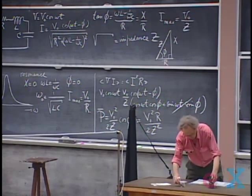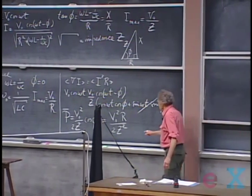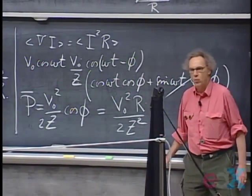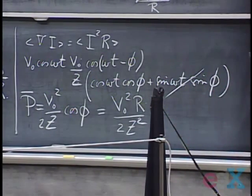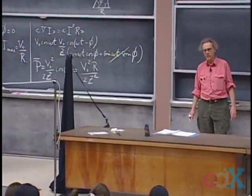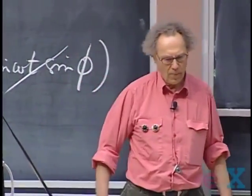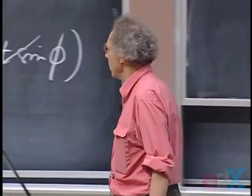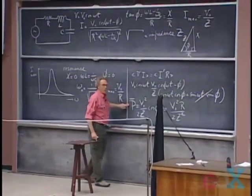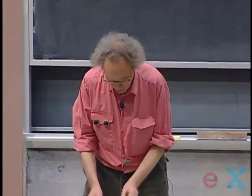At resonance, Z equals R, so substituting gives V_0-squared divided by 2R. That's utterly trivial — it's Ohm's law. There is no self-inductance and no capacitor at resonance, so you might as well treat it as a simple system with only R. At any other frequency than omega_0, Z is always larger than R, so the average power is always lower. It is only at resonance that you generate the highest power possible.